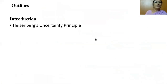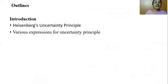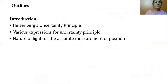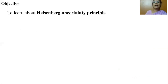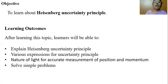The outlines of the talk would be: the statement of Heisenberg's uncertainty principle, various expressions for the uncertainty principle, the nature of light required for accurate measurement of position and momentum, and some simple problems to enhance understanding. The objective is to facilitate learning about Heisenberg uncertainty principle, and learners will be able to explain it, express its various forms, and solve some problems.